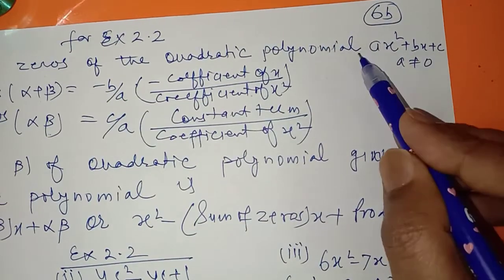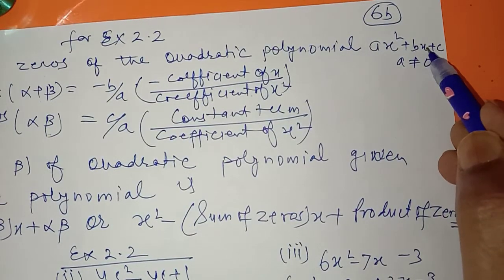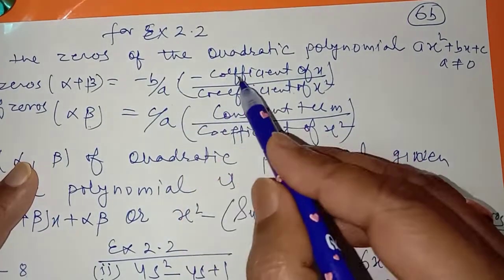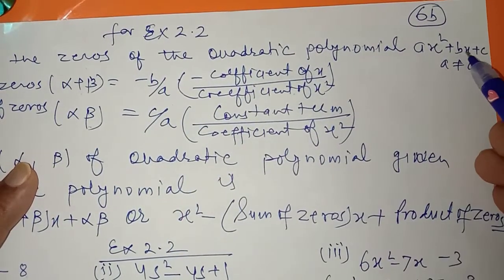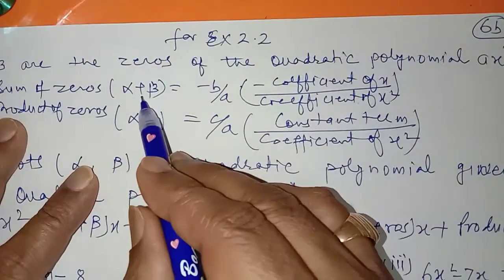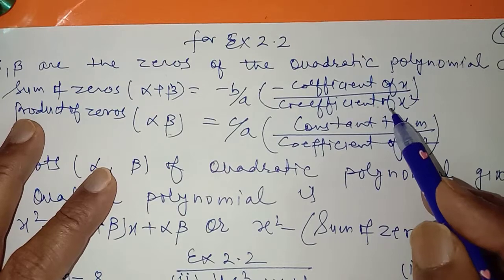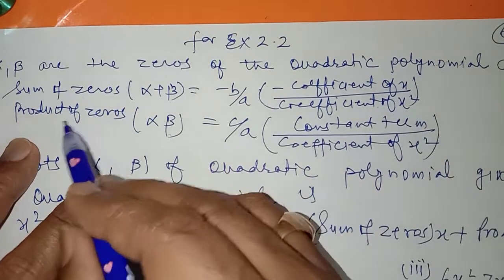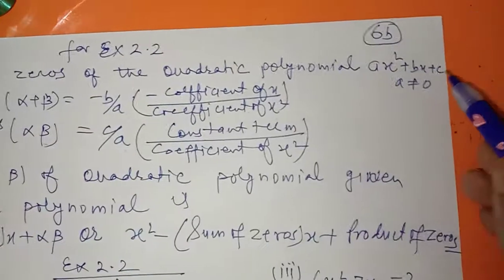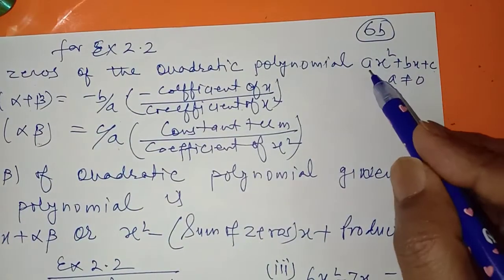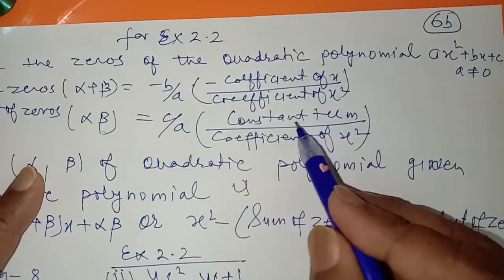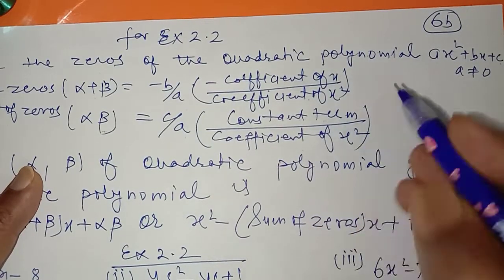Minus b upon a means minus coefficient of x upon coefficient of x squared. So the relationship is: sum of the zeros equals minus coefficient of x divided by coefficient of x squared. The product of the zeros, alpha into beta, can be found as c upon a, that is the constant term upon the coefficient of x squared.